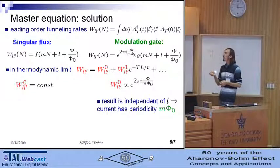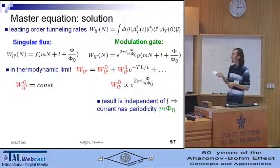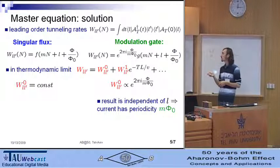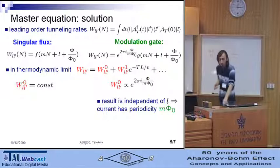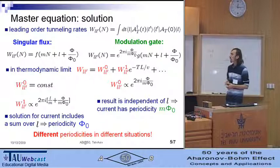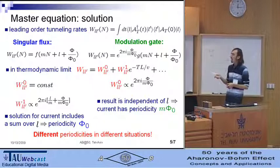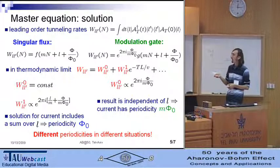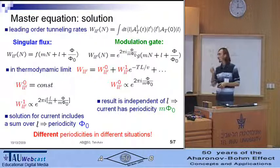And the leading order is just given by the integral over N. Thus, for the case of singular flux, we have constant result while for the case of modulation gate, we have the function which is periodic in flux with larger quasiparticle period. In the next order, in case of singular flux, tunneling rates contain phase factor which depends on the number of quasiparticles. And after summation over this number, the electronic periodicity is restored.